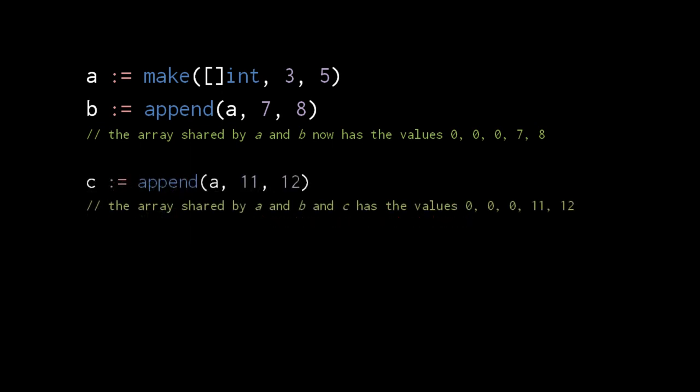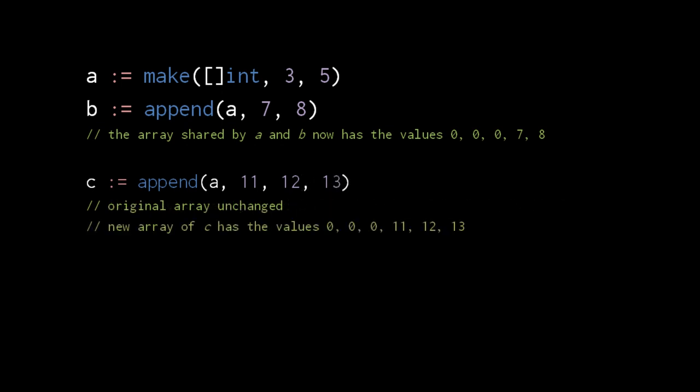If we subsequently append the values 11 and 12 to a, we get a third slice sharing the same underlying array, which now has the values 0, 0, 0, 11, and 12. If instead we were to append 3 values — 11, 12, and 13 — the append function will return a slice with a new, larger array with the values 0, 0, 0, 11, 12, and 13.